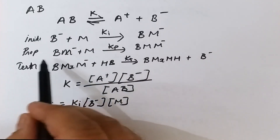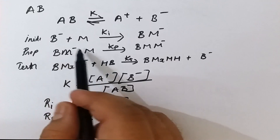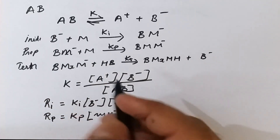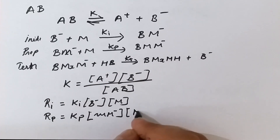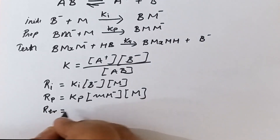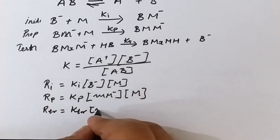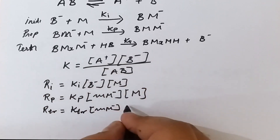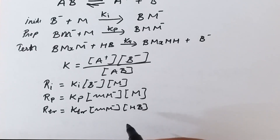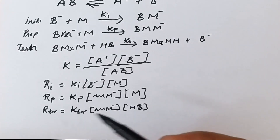After initiation comes the propagation step, where the rate of propagation rₚ equals kₚ times the concentration of the propagating chain M⁻ times the concentration of monomer M. Next is the rate of termination, where kₜᵣ equals the concentration of the propagating chain times the concentration of the proton donating agent HB. Higher concentration of proton donating agent leads to faster termination.